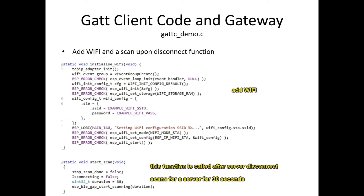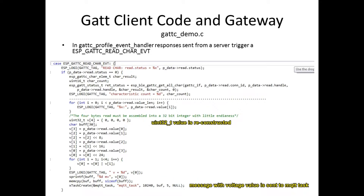Now we move to the GATT client code and gateway. Here we will find many more modifications and additions than in the case for the server. In GATCDemo.c, we straightforwardly add the Wi-Fi code. Additionally, we add a function called StartScan. This function is called after server disconnect and will scan for a server for 30 seconds before exiting. In the GATT client profile event handler, when the server sends a response, the read characteristic event is triggered. The 32-bit voltage value is reconstructed and then combined into a message which is sent on to the MQTT task.